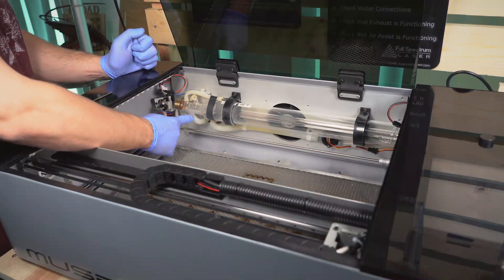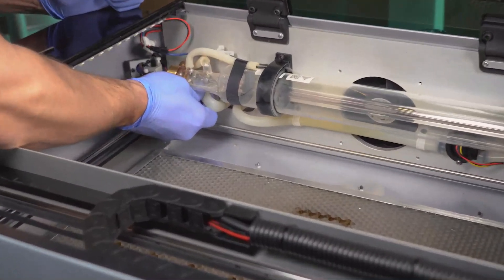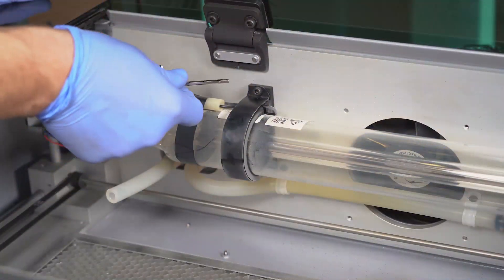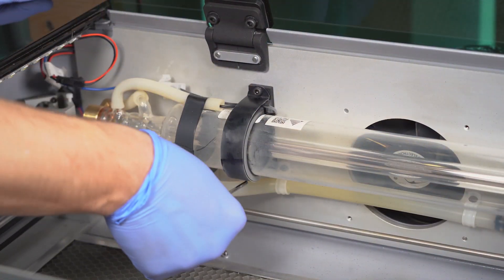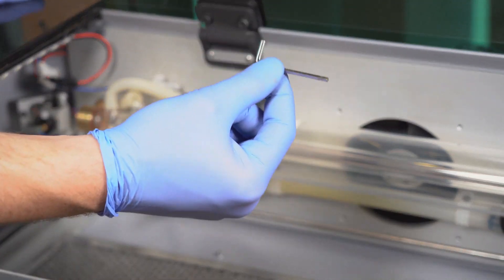Now you want to remove this water hose from the actual laser tube. Then we're going to remove these four hex nuts with the allen wrench that's provided in your case.